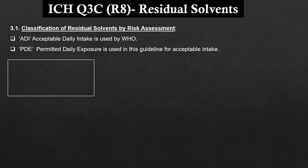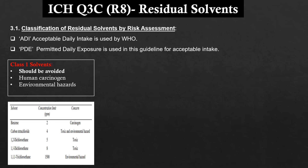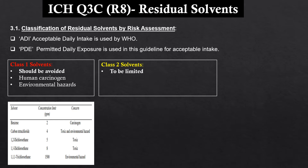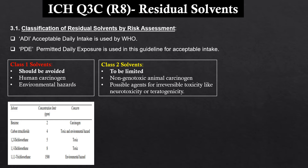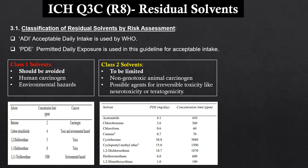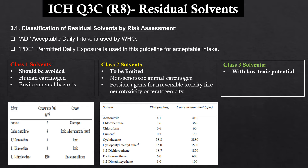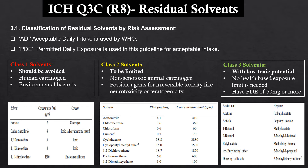For residual solvents there are three classes: class 1, class 2, and class 3. The class 1 solvents are hazardous solvents and should be avoided in the manufacturing process or limited appropriately. They are known human carcinogens and have environmental hazards. Examples include benzene, carbon tetrachloride, 1,2-dichloroethane, etc. Then there are class 2 solvents, which are to be limited. They are non-genotoxic animal carcinogens and possible agents for irreversible toxicity like neurotoxicity or teratogenicity. Examples include acetonitrile, chlorobenzene, chloroform, etc. Then there are class 3 solvents, which have low toxic potential and no health-based exposure limit is needed — they have a high PDE of 50 mg or more. This includes acetic acid, acetone, anisole, heptane, etc.